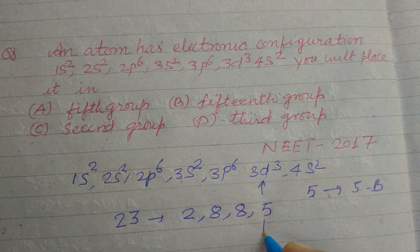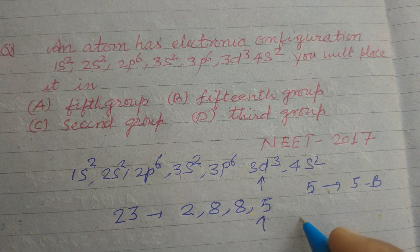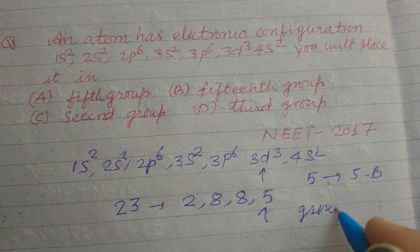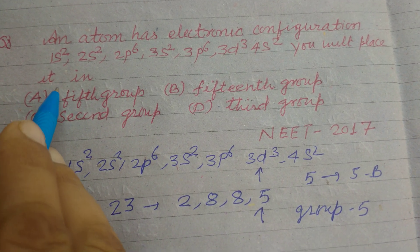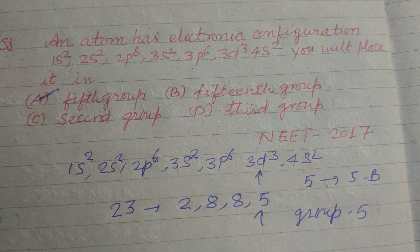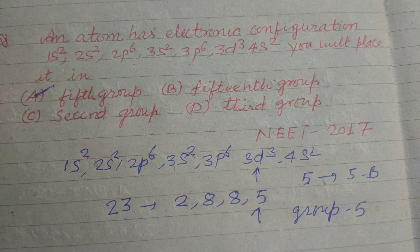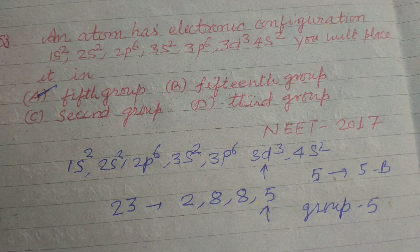So the number of electrons in outermost orbit is 5, therefore its group is fifth. So student, in this way the answer of this question is A, which is fifth group. So I hope you got it. Thanks for watching.